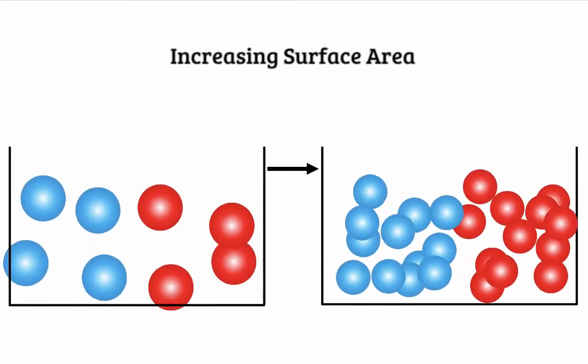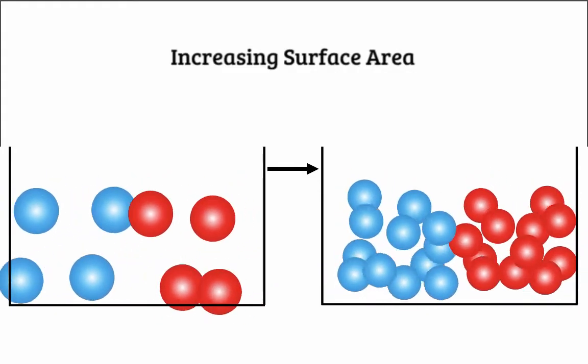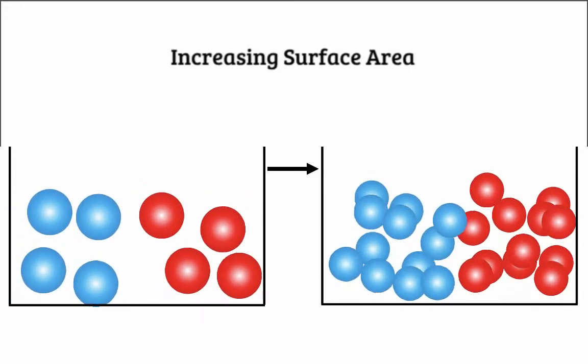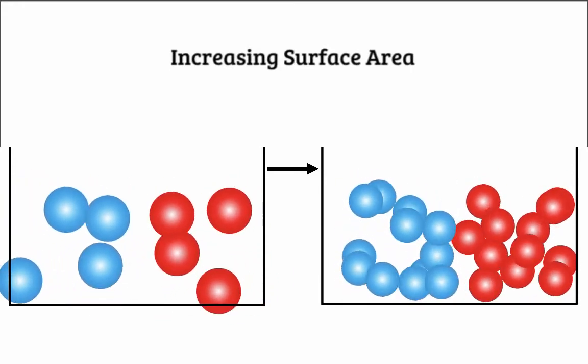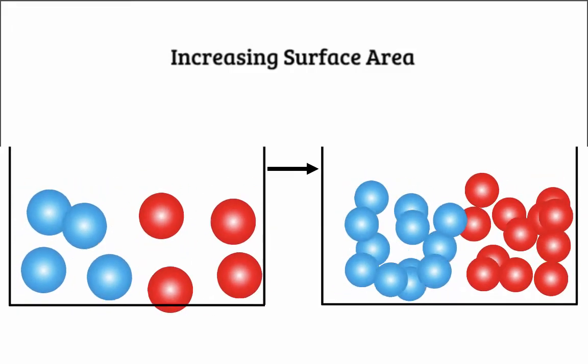The third way we can increase the rate of a chemical reaction is by increasing the surface area of the reactants. What we mean is to crush up any solid reactants. For example, if we had a cube of sugar versus a teaspoon of sugar granules, the sugar granules will dissolve faster.